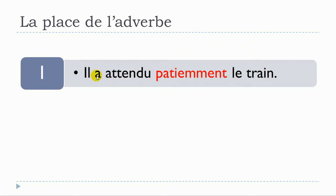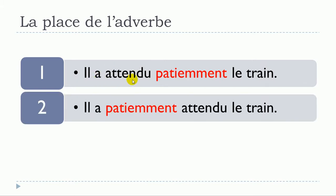When you've got a composed tense — two parts — the same sentence can also be constructed differently. It is possible to put your adverb right after avoir: il a patiemment, and then you continue with your participe passé: attendu le train. So the second option is: il a patiemment attendu le train.